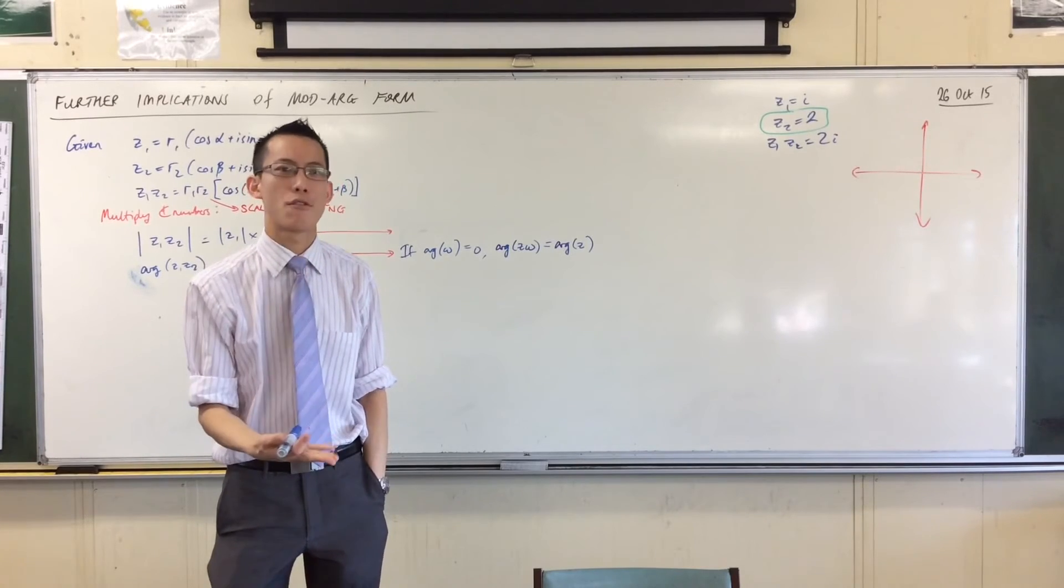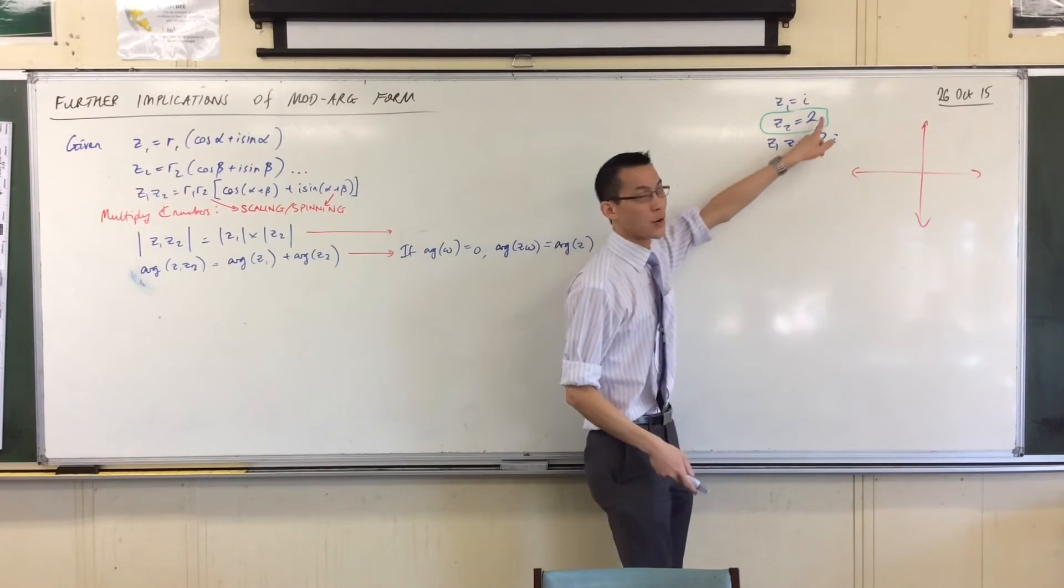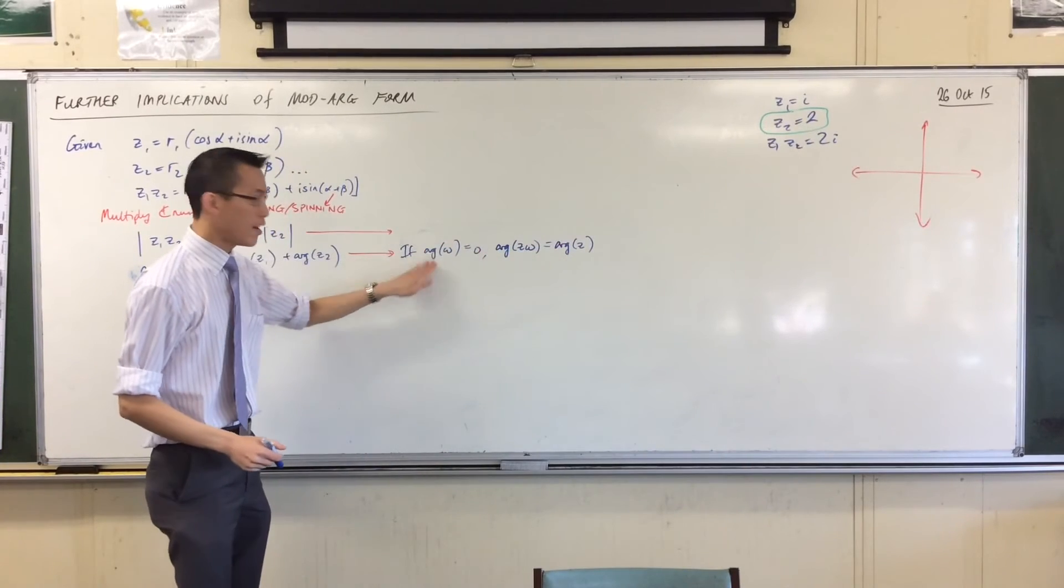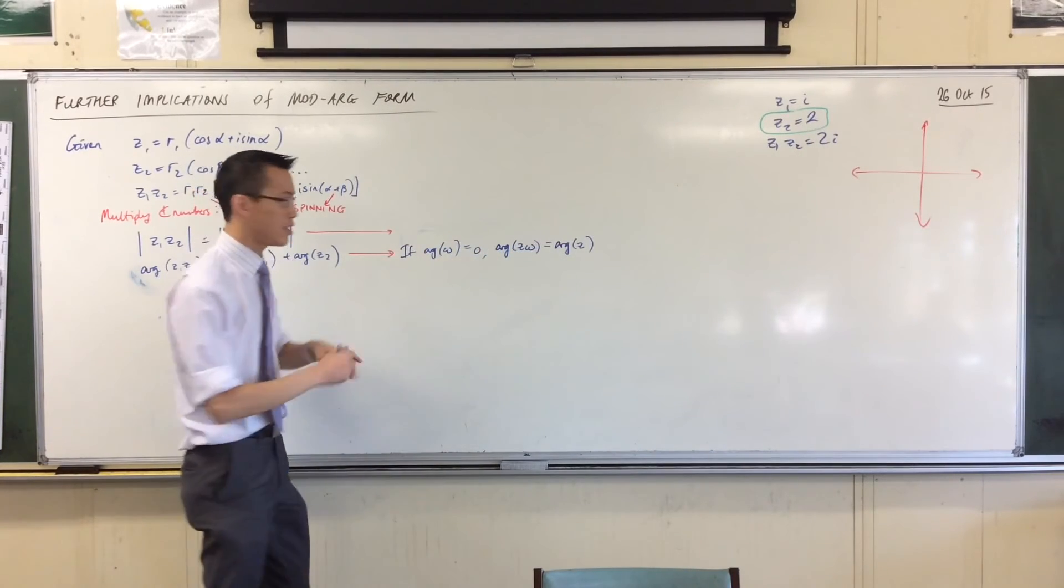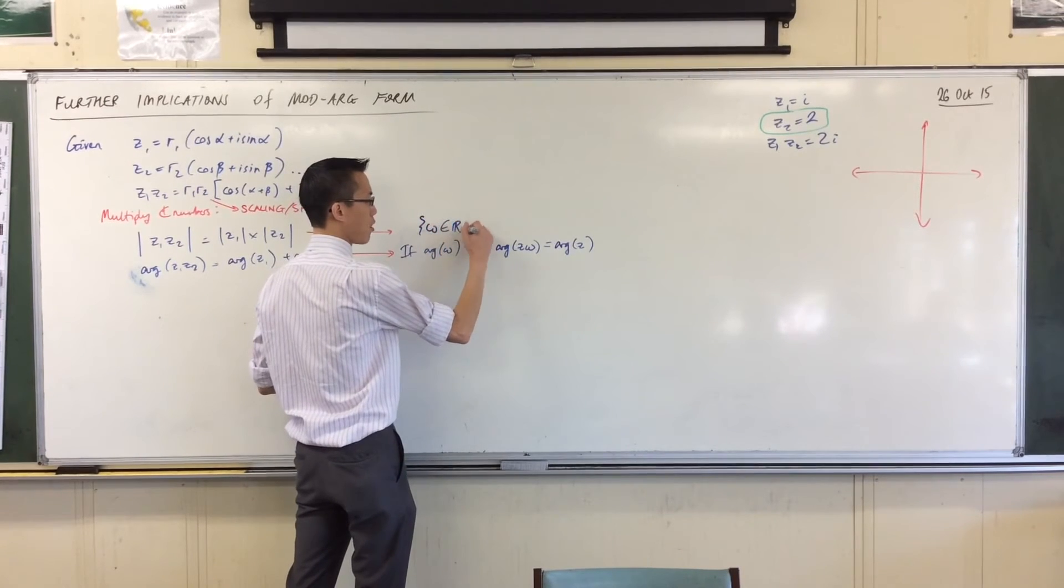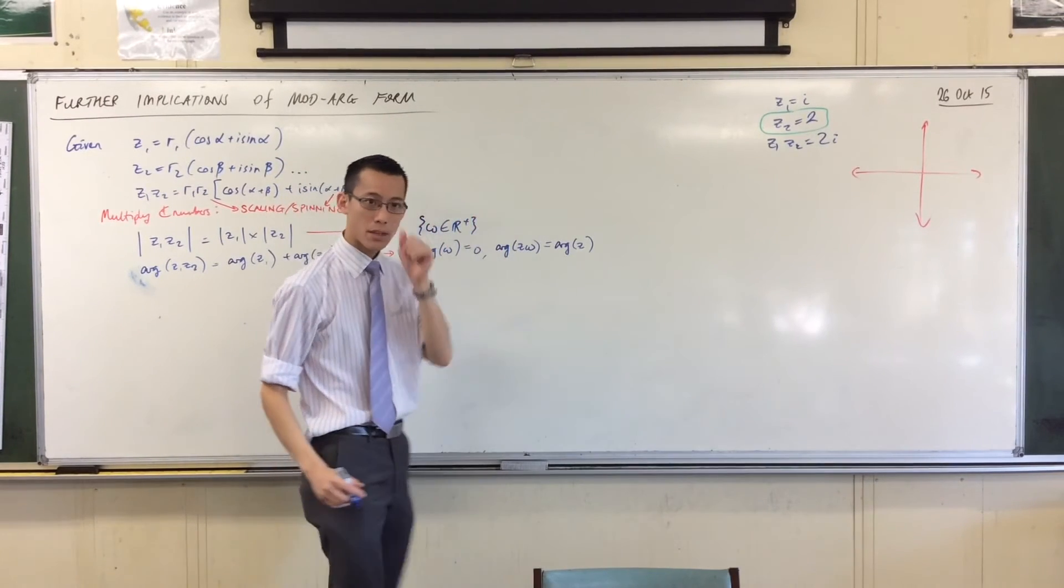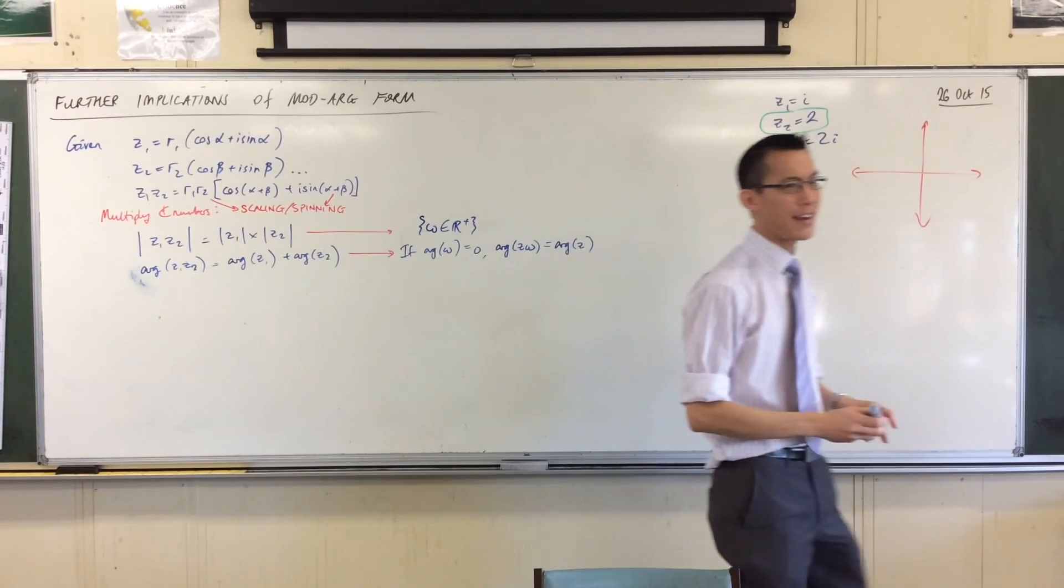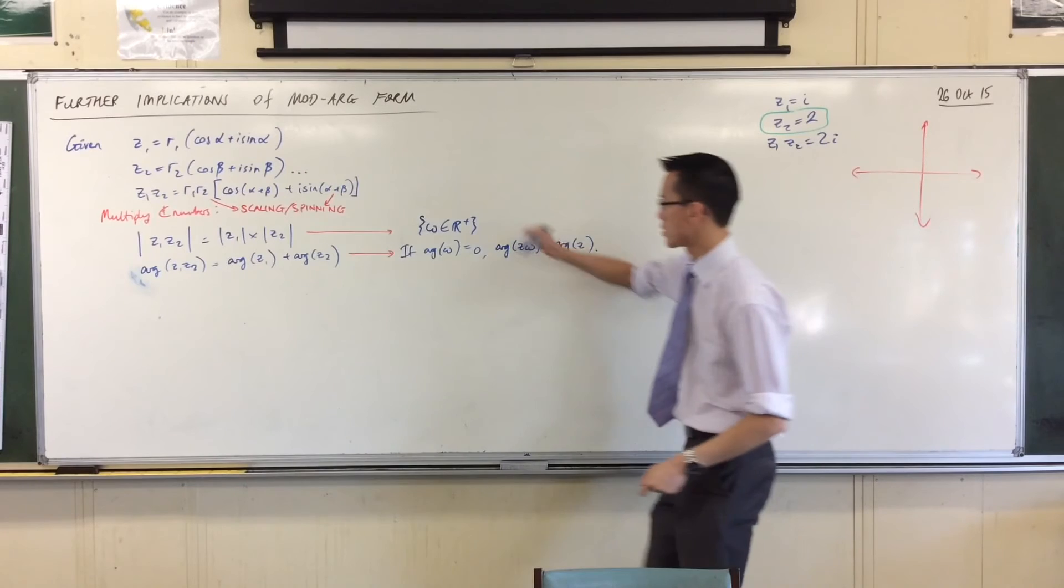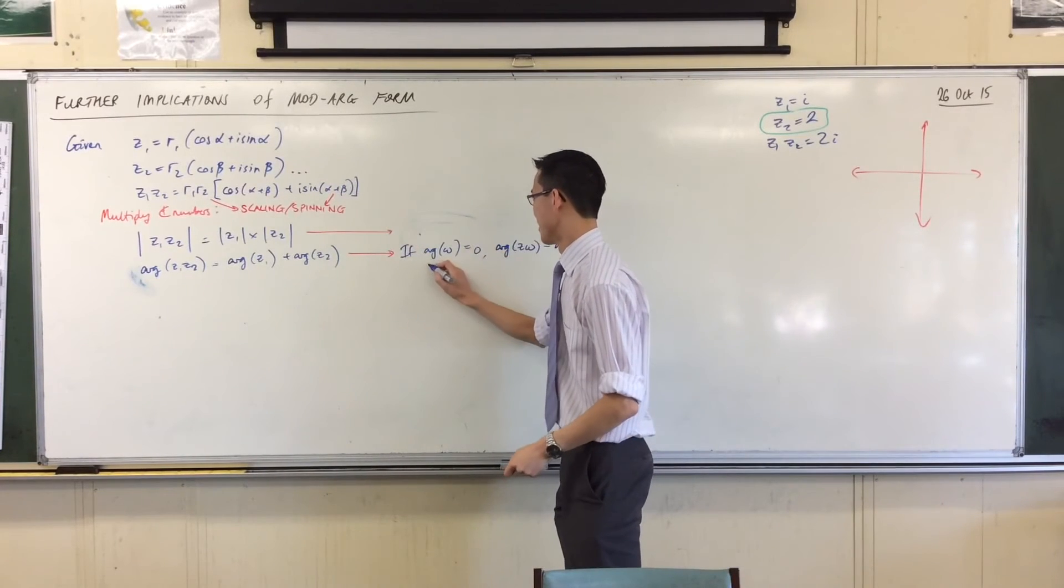So therefore that would quite significantly change the argument. So that's what I've got here. If the argument of Omega is zero, in other words if Omega is a positive real number, then when you multiply some other complex by it, its argument doesn't change.